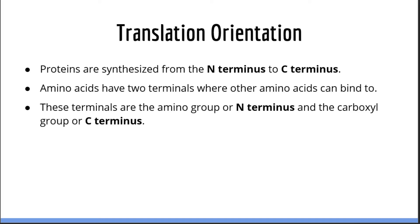Another important concept is the orientation of protein synthesis. Proteins are made from the N-terminus to C-terminus orientation. Much like how DNA and RNA have a 3' and 5' end, proteins have an N-terminus and a C-terminus. The N-terminus refers to the end of the protein which contains a free amino group, and the C-terminus refers to the end of the protein that contains a free carboxyl group. During translation, amino acids are always added to the carboxyl end — that is, translation occurs in the N-terminus to C-terminus direction.